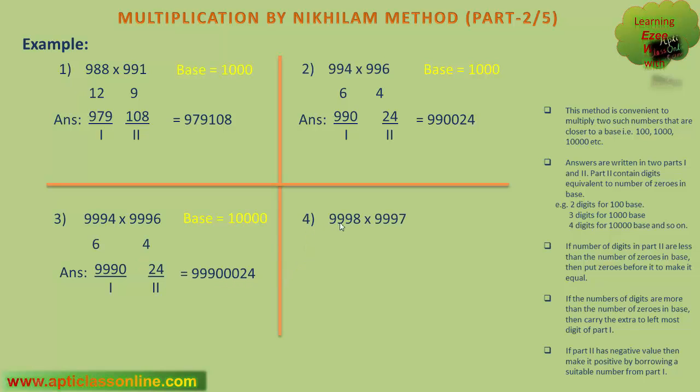The last example is 9998 into 9997. For this also, the base is 10000. 9998 is 2 less than 10000, and 9997 is 3 less than 10000. So the answer will be difference of 9998 and 3, or 9997 and 2, which is 9995. This becomes the first part.